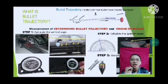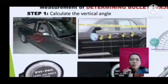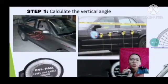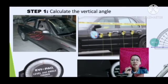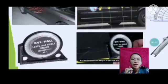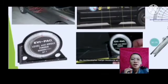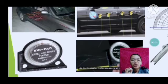For measuring and determining bullet trajectory and the origin of a bullet, the first step is to calculate the vertical angle. Police officers use a trajectory rod to measure the angle from the wall or from the bullet impact point down to the ground. They also use an angle finder or inclinometer to help measure the angle.